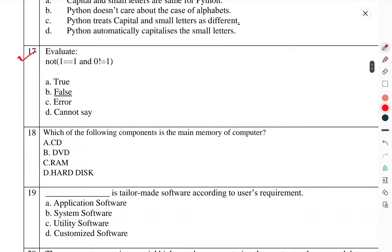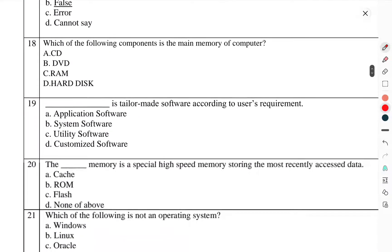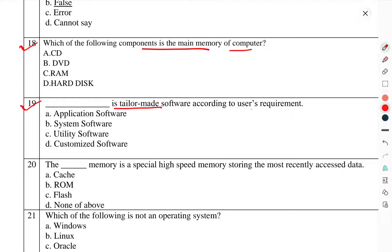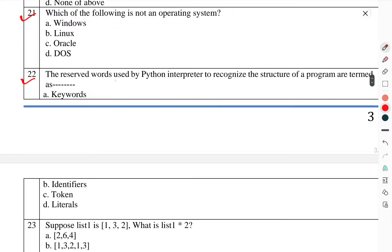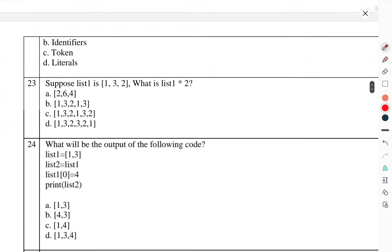Question number 17: Evaluate. Question number 18: Which of the following components is the main memory of a computer? Question number 19: Which is a tailor-made software according to the user's requirement? Question number 20: Which special high-speed memory stores the most recently accessed data? Question number 21: Which of the following is not an operating system? Question number 22: The reserved words used in the Python interpreter to recognize the structure of the program are termed as?